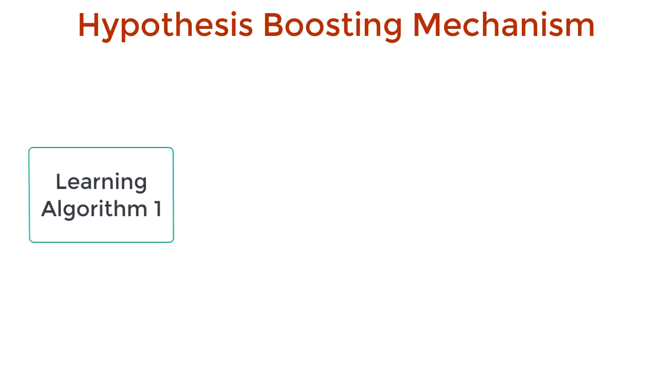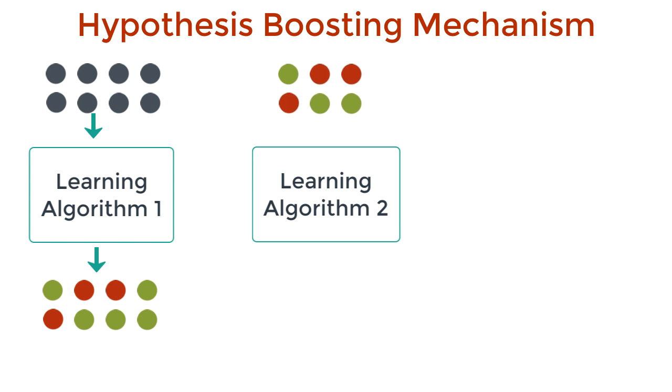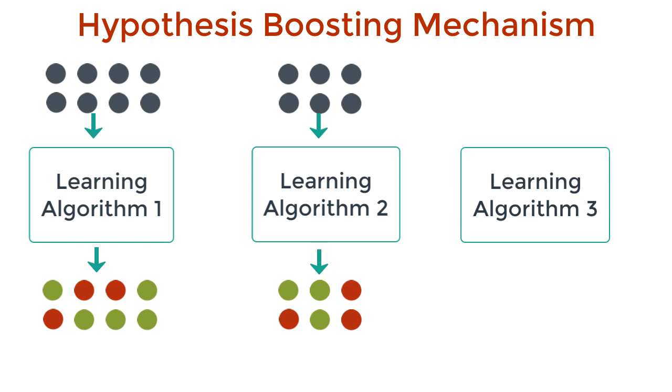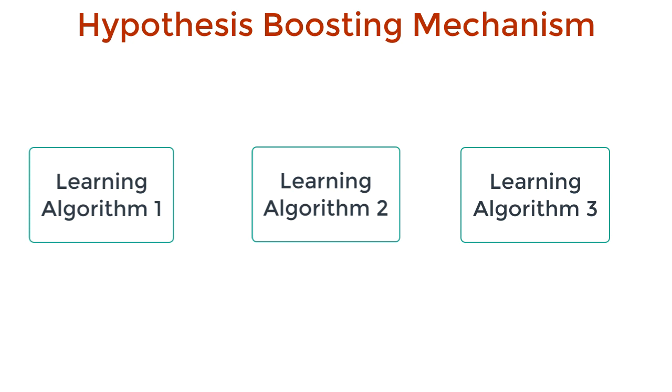So to construct the first hypothesis, feed it all the training data we have. For the second hypothesis, construct the dataset where half the points were classified correctly by the first hypothesis, and the other half was incorrectly classified. This way, the second hypothesis can somewhat compensate for the shortcomings of the first. Now, the third hypothesis is basically a tiebreaker. So we use the points that the first two didn't agree on and construct training samples to train this third hypothesis. So the third hypothesis overcomes the shortcomings of the first and the second. When we want to make some predictions on unseen data, we basically feed it to all these three hypotheses, determine their outputs, and the majority vote wins.